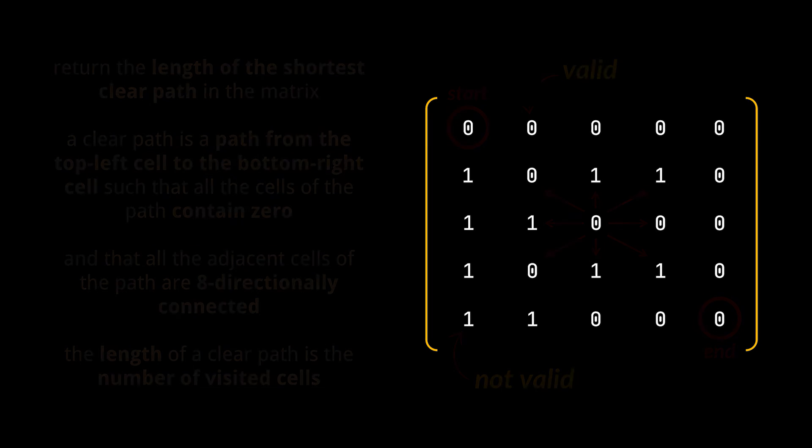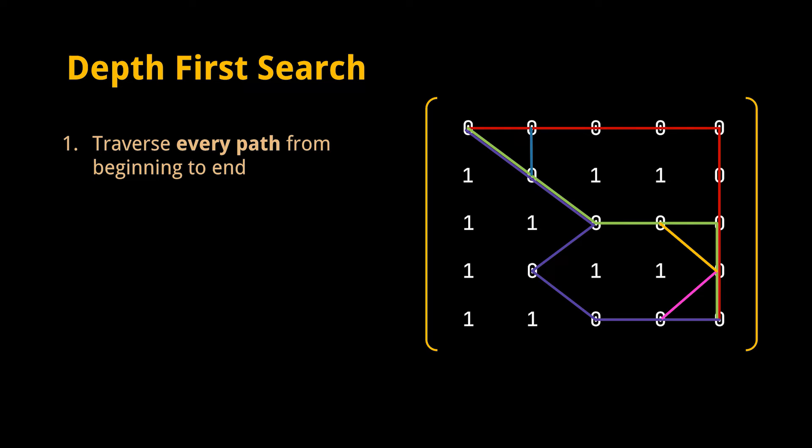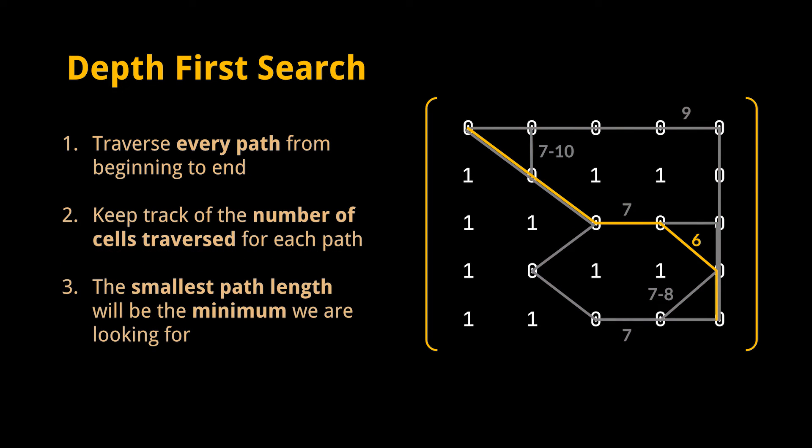So if we were to apply the DFS algorithm here, the implementation would lead to something like this. We will have to traverse every existing path from beginning to end. Then, after traversing all the paths while keeping track of the number of cells we traversed for each path, the minimum length we are looking for will be the length of the smallest path among all the paths we went through. So we ended up traversing all the zero cells multiple times. Many of the cells having a zero value were traversed more than once.